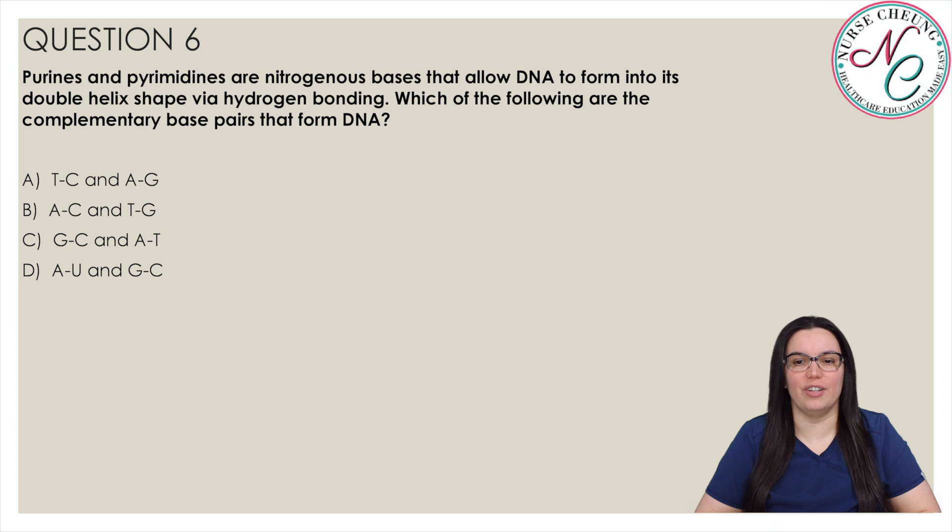Purines and pyrimidines are nitrogenous bases that allow DNA to form its double helix shape via hydrogen bonding. Which of the following are the complementary base pairs that form DNA? Is it A: T to C and A to G? B: A to C and T to G? C: G to C and A to T? Or D: A to U and G to C? And the correct answer is C, G to C and A to T.